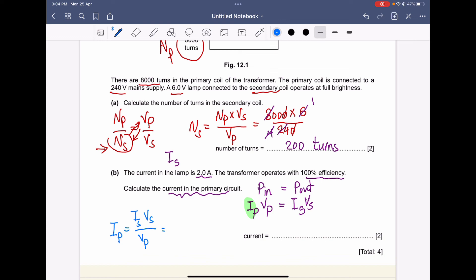The current in the secondary is 2 amperes times the voltage across the lamp which is 6, divided by the input voltage or the primary voltage 240. Using the calculator, it gives us 0.050 ampere.